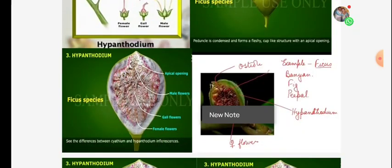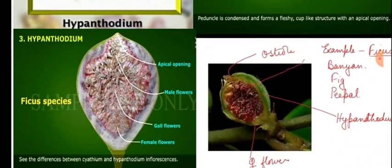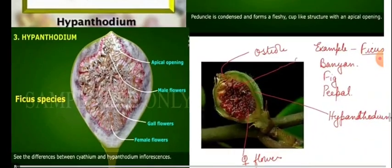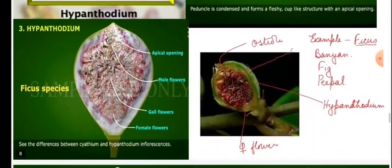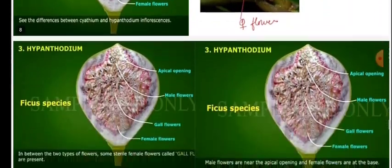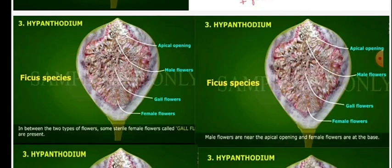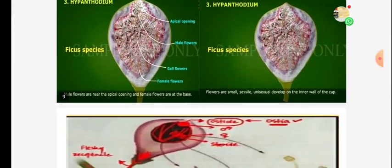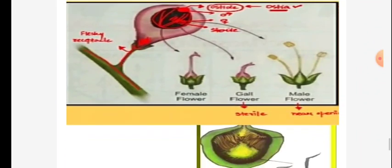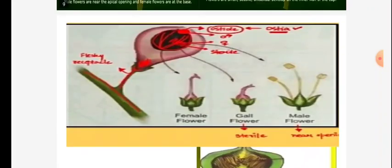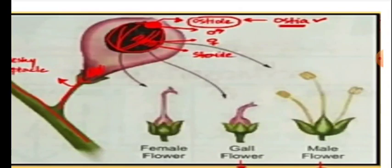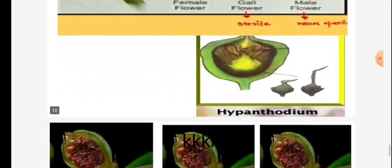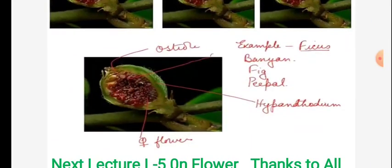In Hypanthodium, the pedicel is condensed and forms a fleshy cup-like structure — that is the characteristic feature. The LS shows the position of all flowers inside. Remember these three special types: Verticillaster, Cyathium, and Hypanthodium. See the positions of male flowers and female flowers. The osteole is the part of the involucre. Examples include Ficus, banyan, and peepal.